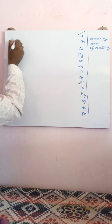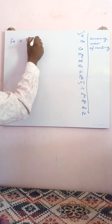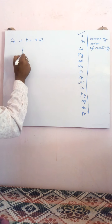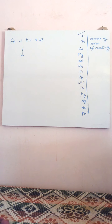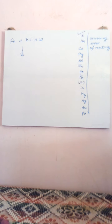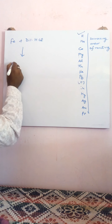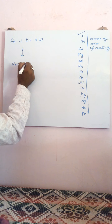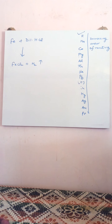Another example: the reaction of iron with dilute HCl. You can see the placement of hydrogen and iron in the reactivity series — iron is placed above hydrogen, meaning iron can displace hydrogen from solution. So the product will be FeCl₂ plus hydrogen gas. I hope you understood displacement reaction.